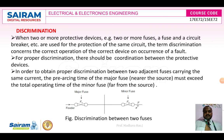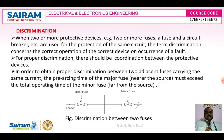In order to obtain proper discrimination between two adjacent fuses carrying the same current, the pre-arcing time of the major fuse near the source must exceed the total operation time of the minor fuse. That is very important — the minor fuse must melt first. If the minor fuse does not melt, then the major fuse must melt. This is called discrimination.